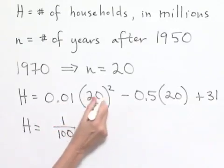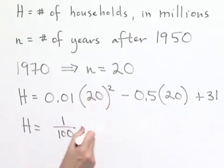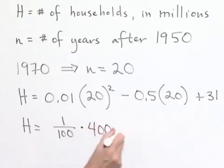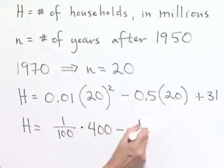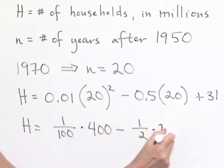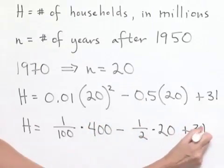Let's evaluate 20 squared. That's going to be 20 times 20, which is 400. Minus, we have five tenths, which is the same as one half, multiplied times 20, and then we'll add 31.